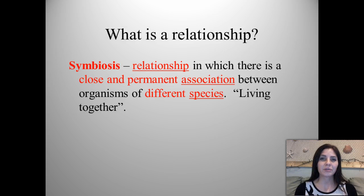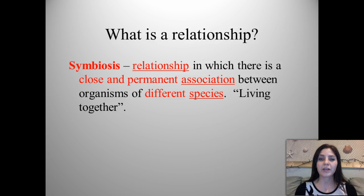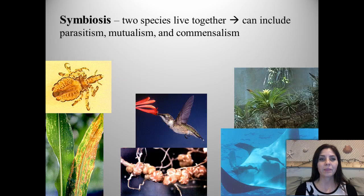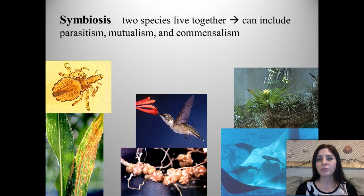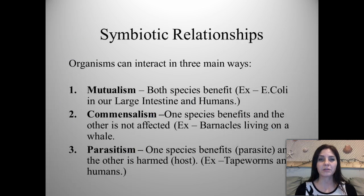Relationships in ecological systems are called symbiosis — a relationship in which there is a close and permanent association between organisms of different species living together. Two species live together, and it includes different categories: parasitism, mutualism, and commensalism.